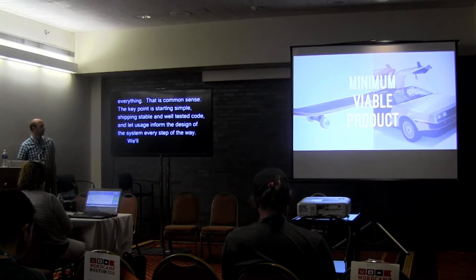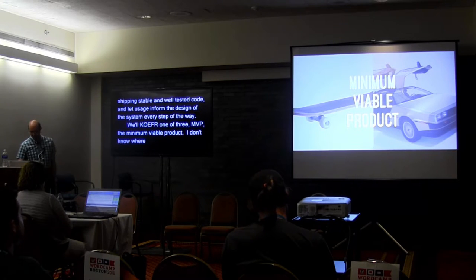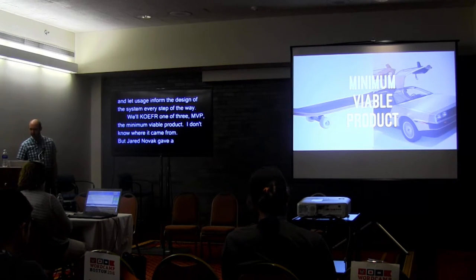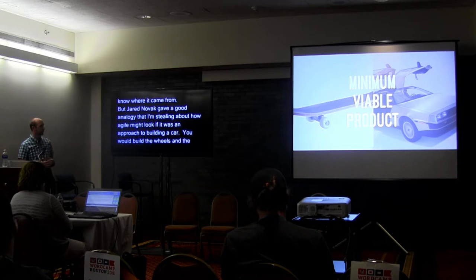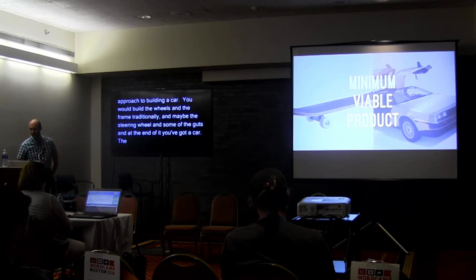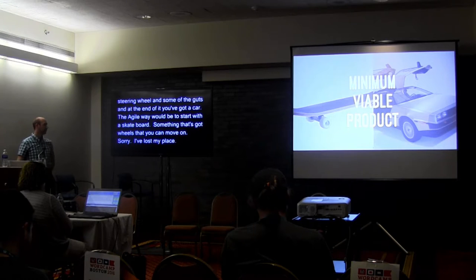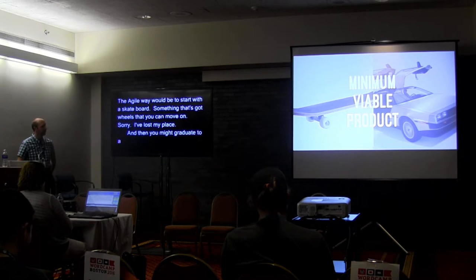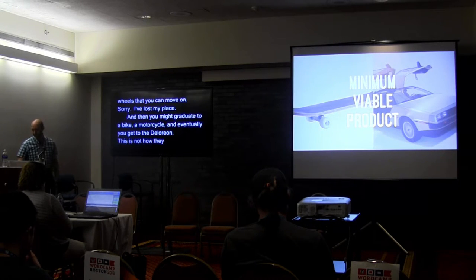We'll cover in WP103 the notion of MVP — the minimum viable product. One of the partners at Upstatement gave a good analogy about how agile might look if it were an approach to building a car. In the traditional sense, you'd build the wheels, the frame, the steering wheel, and the guts, and at the end you've got a car. The agile way would be to start with a skateboard — something with wheels that you can move on — then graduate to a bike, a motorcycle, and eventually the DeLorean. The key point is that every step of the way you can use it.